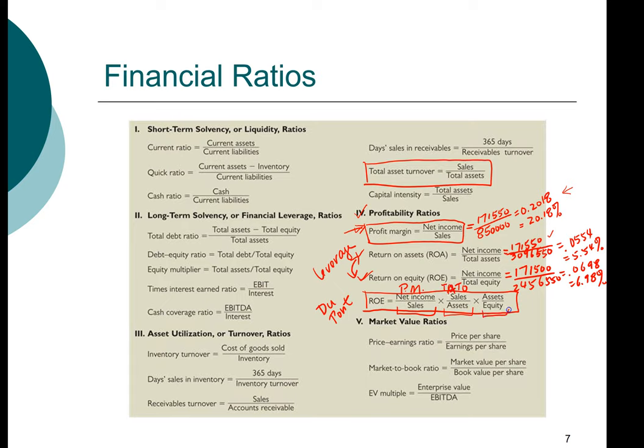And the last component is asset divided by equity. Again, we have seen that asset divided by equity is the equity multiplier. So those are the three components.